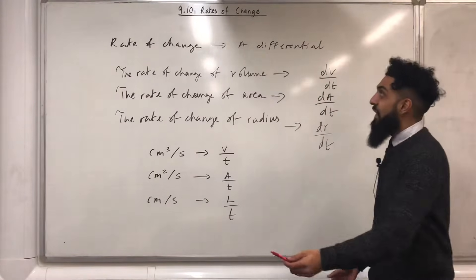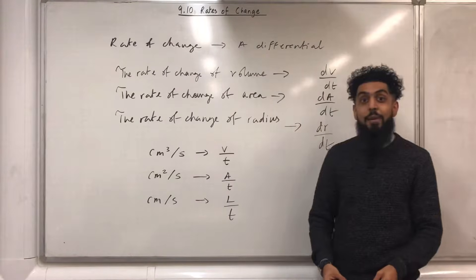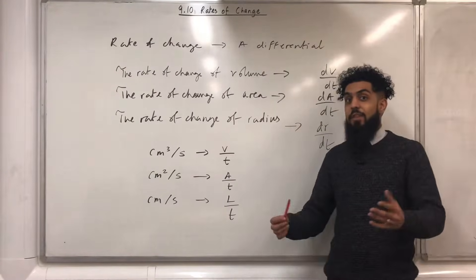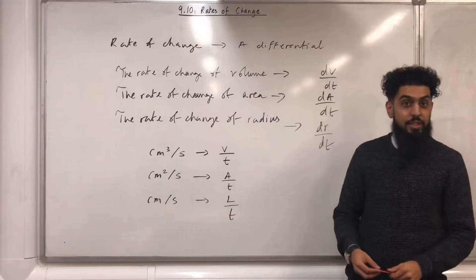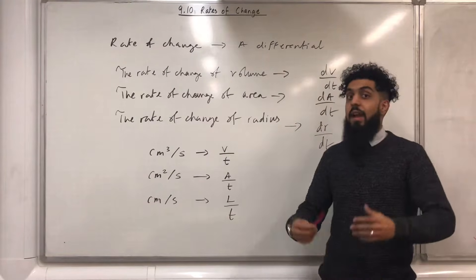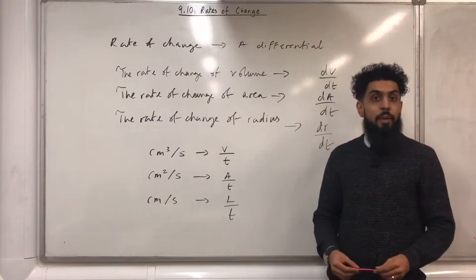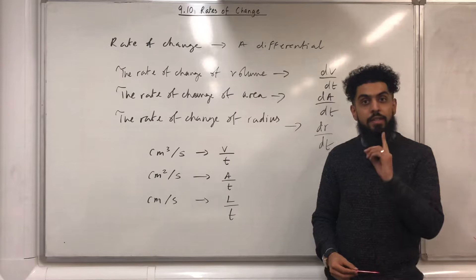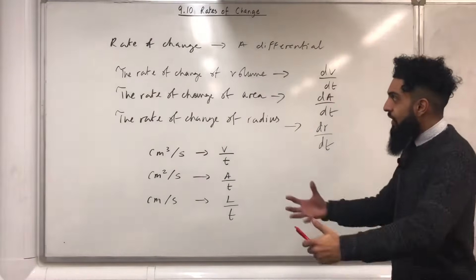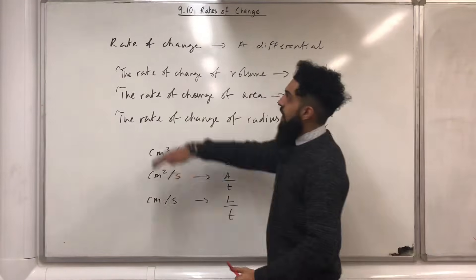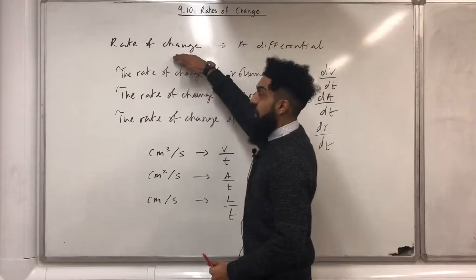In this video I'll be looking at 9.10 rates of change. 9.10 represents chapter 9, section 10 of the Pearson A level maths pure maths year 2 textbook. Let's start off with the line rate of change.